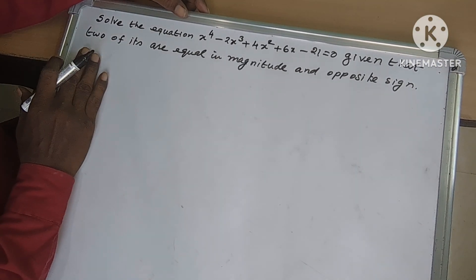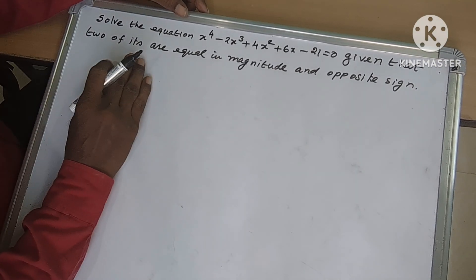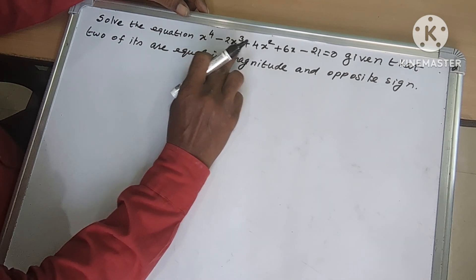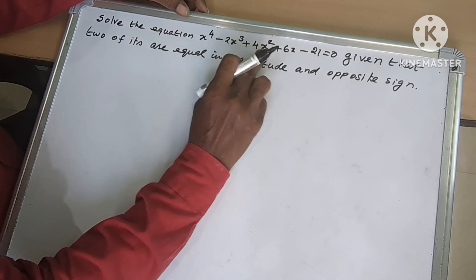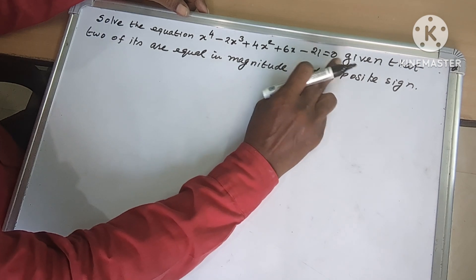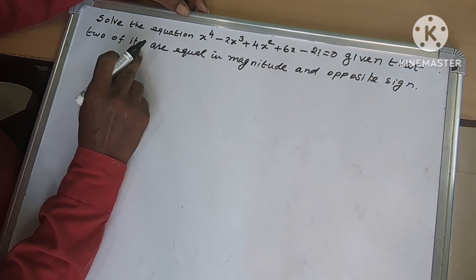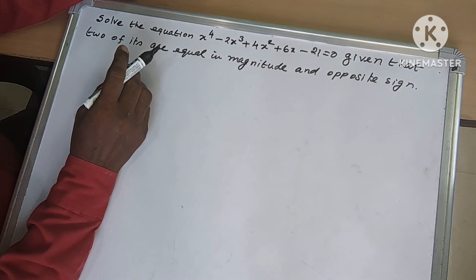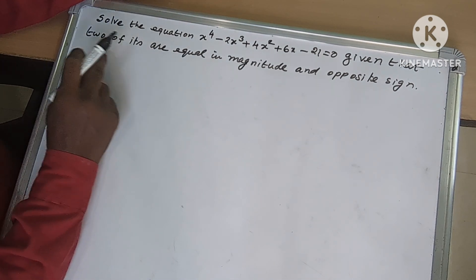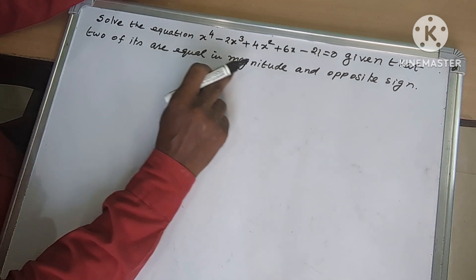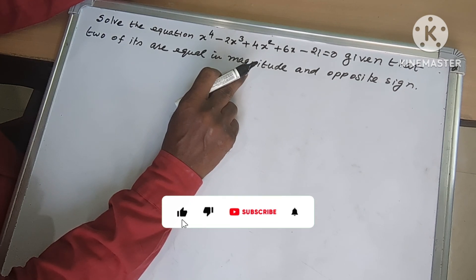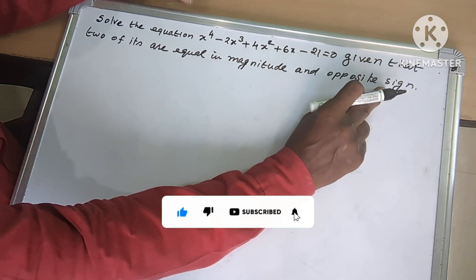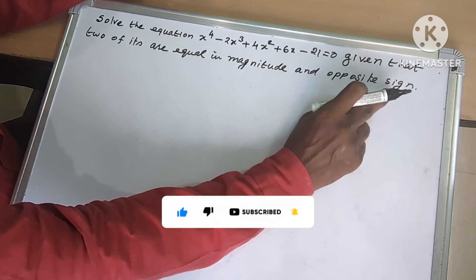Good morning friends. Now we do one sum. Solve the equation x⁴ minus 2x³ plus 4x² plus 6x minus 21 equal to 0. Given that 2 of its roots are equal. So this is power 4, so we have 4 roots. 2 of its roots are equal in magnitude but they are on opposite sides — 2 roots are equal and opposite.